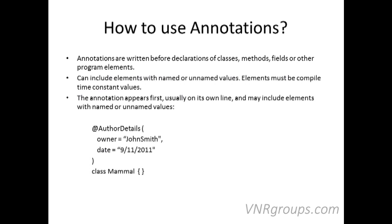Annotations are written always before the declaration of a class, method, or field, and they can include elements with named or unnamed values. The elements must be compile-time constant values. For example, if you have a class called Mammal and you define an annotation called @AuthorDetails, that annotation can have two values: owner and date — say, owner is "John Smith" and date is "9-11-2011". That is how you declare an annotation.